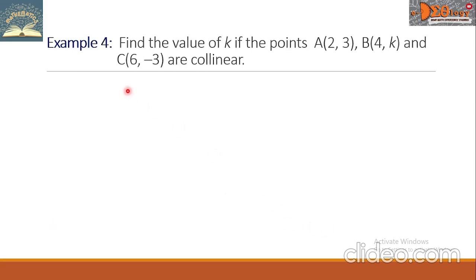Example 4. Find the value of K if the points A(2, 3), B(4, K), and C(6, negative 3) are collinear.